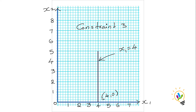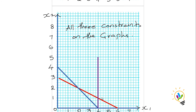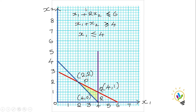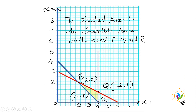With all three constraints drawn, we now identify which side satisfies each inequality. Constraint 1 (≤ 6) requires the area below the red line. Constraint 2 (≥ 4) requires the area above its line. Constraint 3 (x1 ≤ 4) requires the area to the left of the vertical line. The common area satisfying all three constraints is the feasible region, shown as the shaded area with corner points P, Q, and R.